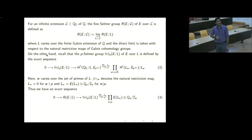W varies over primes of L lying over the primes in sigma, and these maps are restriction maps. L_W embeds into these Galois cohomology groups via Kummer maps. Once we have this definition of the Selmer group, one can check there is an exact sequence: the fine Selmer is a subgroup of the Selmer group, and then we have the image of Kummer maps over primes dividing P.